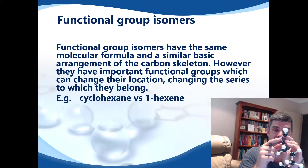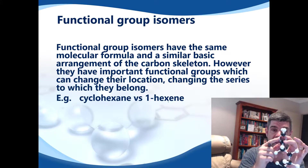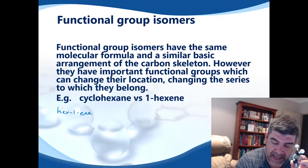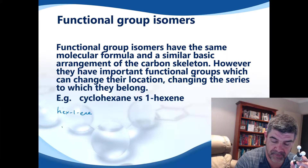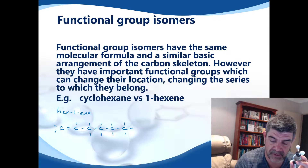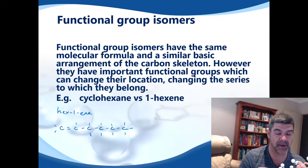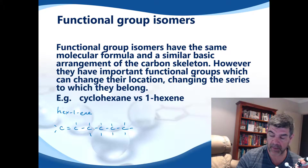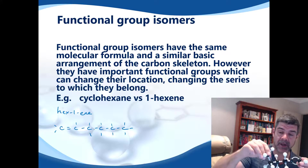The double bond is on the end carbon, so I'm going to name it hex-1-ene. When I draw it, I draw the chain with 6 carbons. To save a little bit of time, I won't put the hydrogens in, but every bond not already shown as bonded to a particular atom will be a hydrogen. So this is my hex-1-ene molecule.